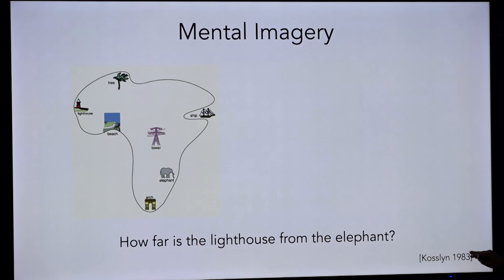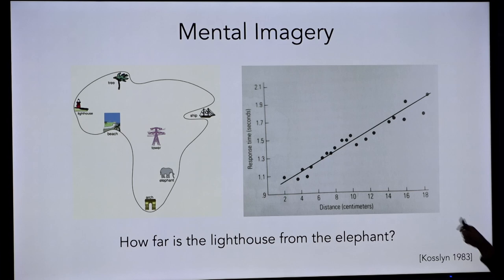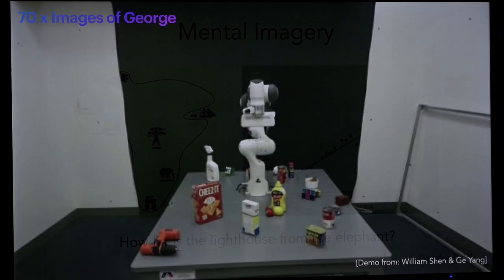There have been a lot of studies qualifying those statements, but confirming that we really do seem to use mental images to do reasoning. Here's one more example from Kosslyn, 1983. He showed participants a cartoon, said memorize the location of the elephant and the lighthouse and other elements, then took the cartoon away and asked questions like 'how far is the lighthouse from the elephant?' Participants were scanning their memory of the picture across that distance, giving a linear relationship between reaction time and the distance between landmarks.